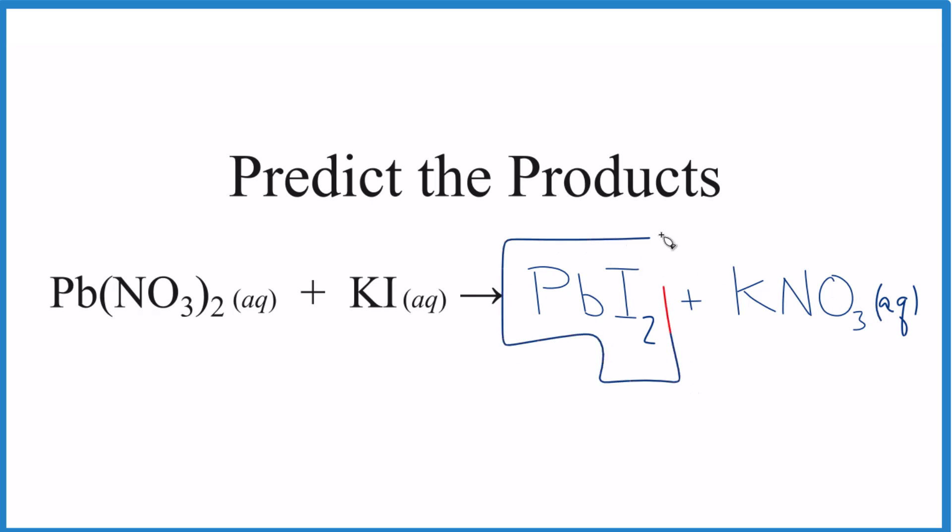But lead compounds, when you see lead compounds, there's a good chance they're insoluble. PbI2 is insoluble. So we're going to put an S after it. It's going to be a solid. It falls to the bottom of the test tube as the precipitate. So this is a precipitation reaction as well as a double displacement.